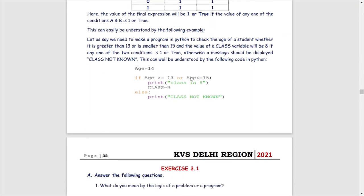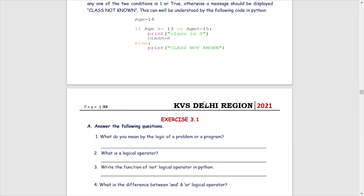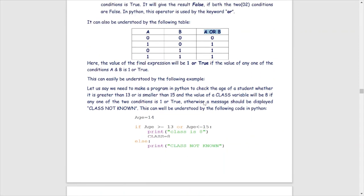Let us understand this with a small Python code. Age equals 14. We use the same two conditions: age greater than or equal to 13, and using 'or' instead of 'and', age less than or equal to 15. With age equals 14, the first condition is true and the second condition is also true, so we get the answer: class is 8. Only if both conditions are false will it go into the else part. In our coming exercises, we will do many practice questions to make logical operators more understandable. Thank you for watching this video.